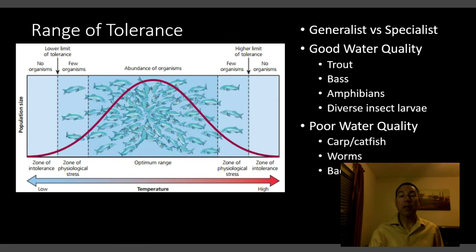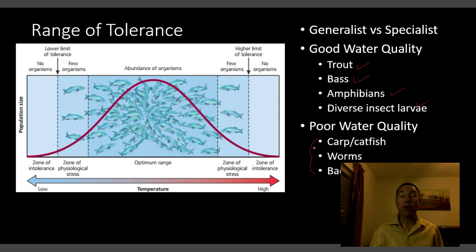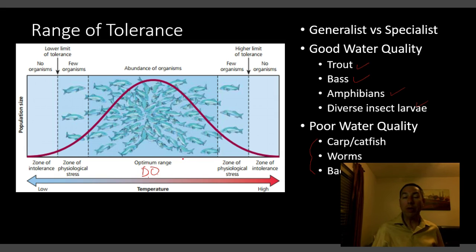The oxygen sag curve is important because of the range of tolerance. Every organism has a certain range of tolerance for water quality parameters. With low dissolved oxygen, certain species won't be present — we won't have trout, bass, some amphibians, or a diverse insect larvae community. Generalist species like carp, worms, and bacterial films will be present in polluted waters, while specialists like trout and bass require a narrow, higher range of tolerance. This picture shows range of tolerance for temperature, but the same concept applies to dissolved oxygen. Once you get outside the sag curve and dissolved oxygen rebounds, you can start seeing those more important species again.